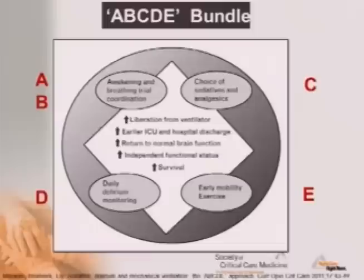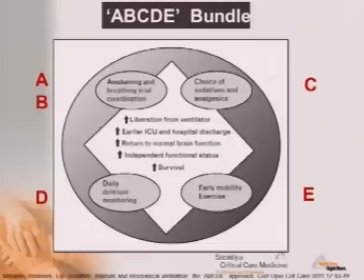We know the ABCDE bundle: A is awakening, B is breathing trial coordination, C is choice of sedative and analgesic, D is daily delirium monitoring, and E is exercise.